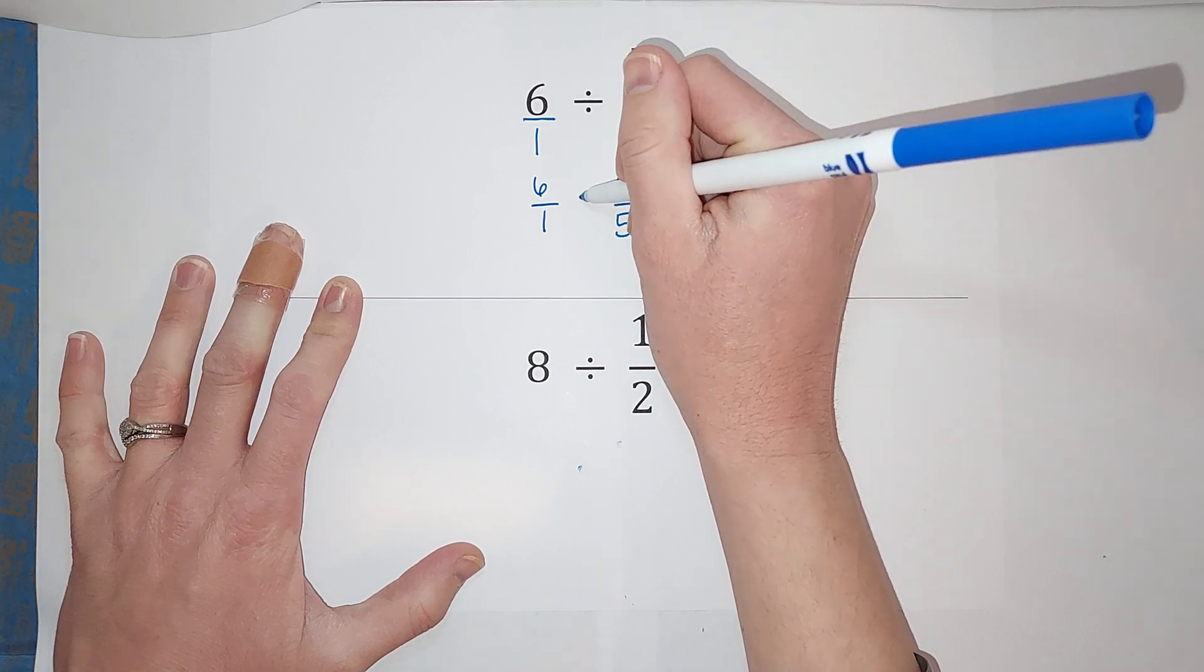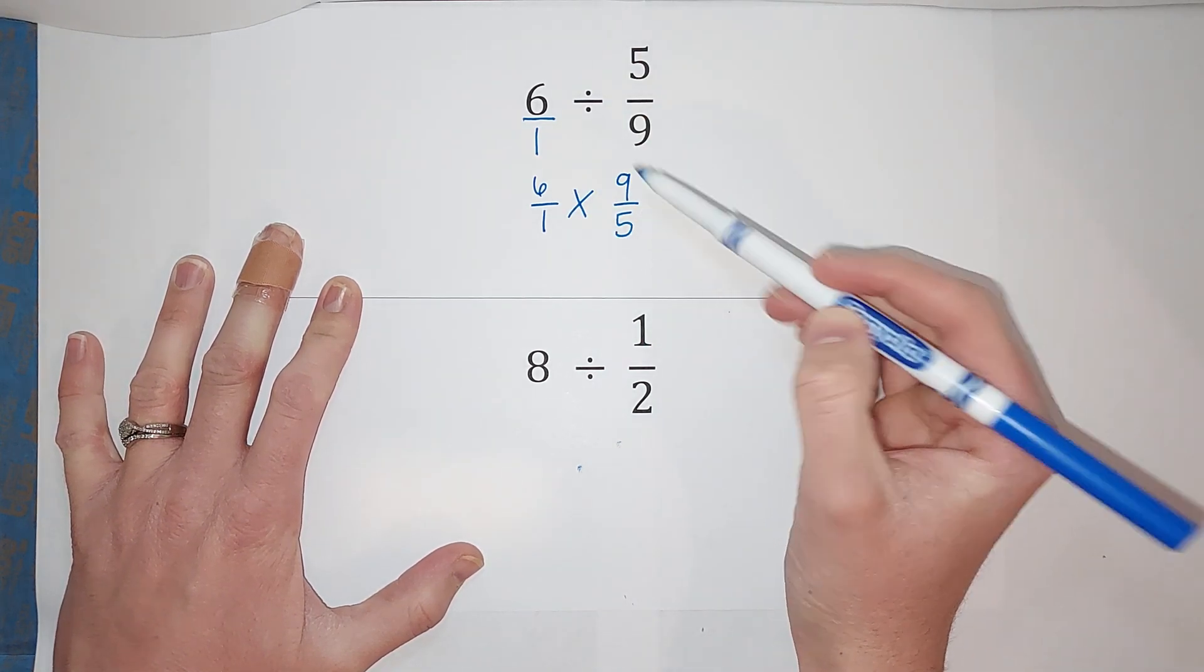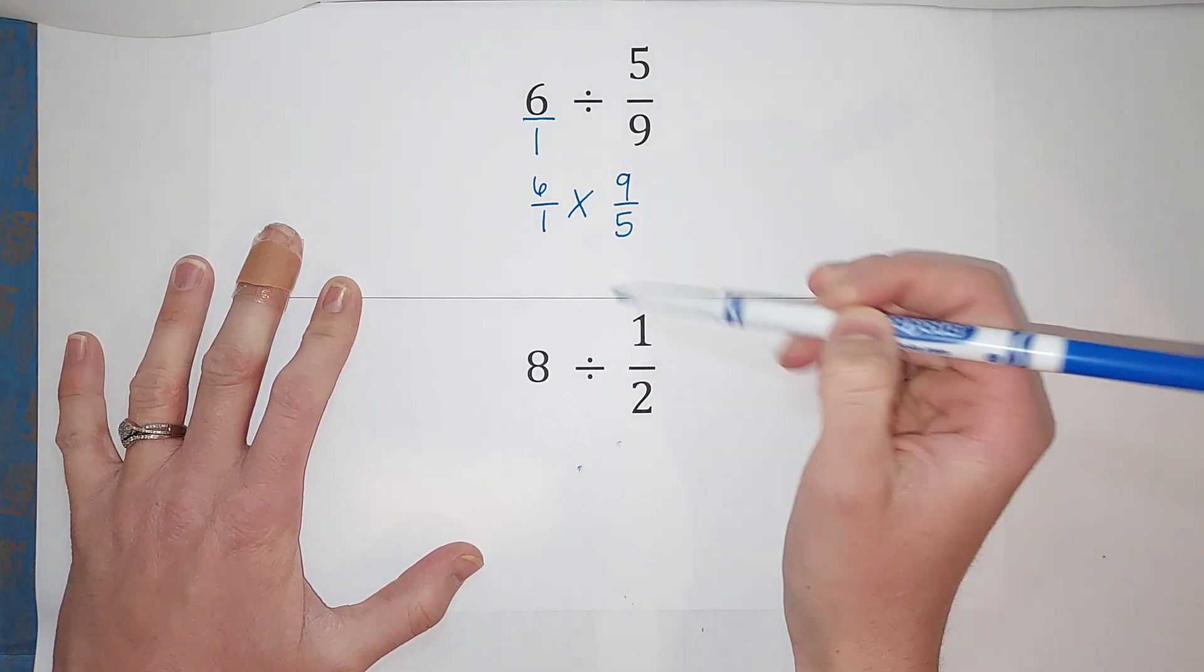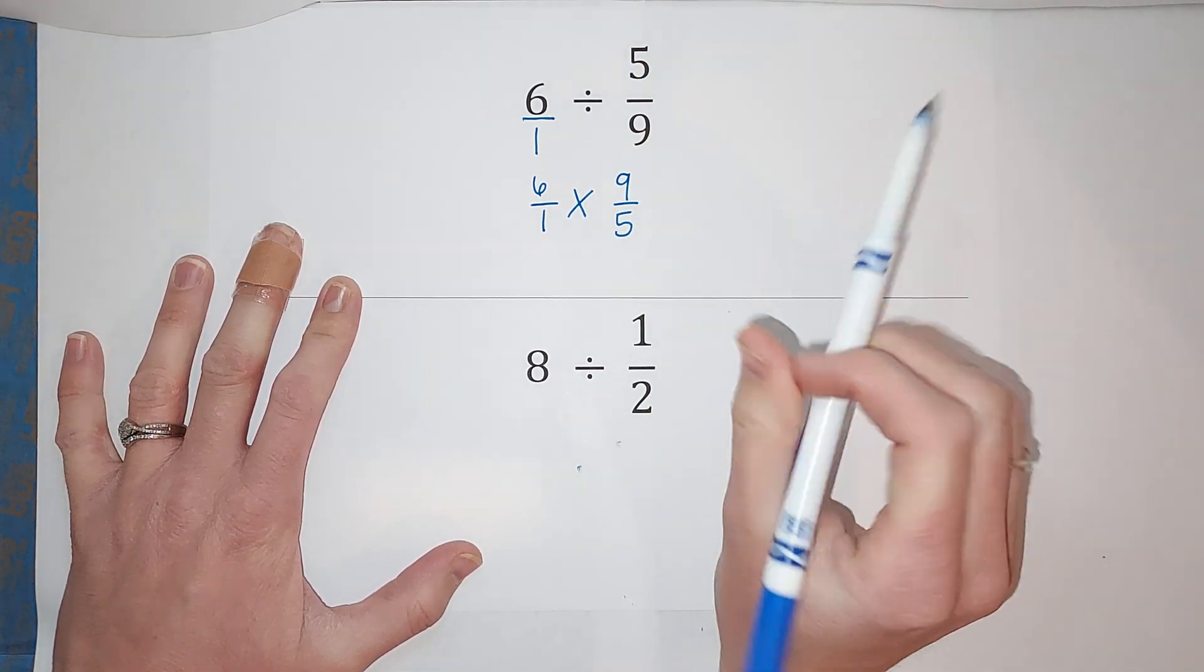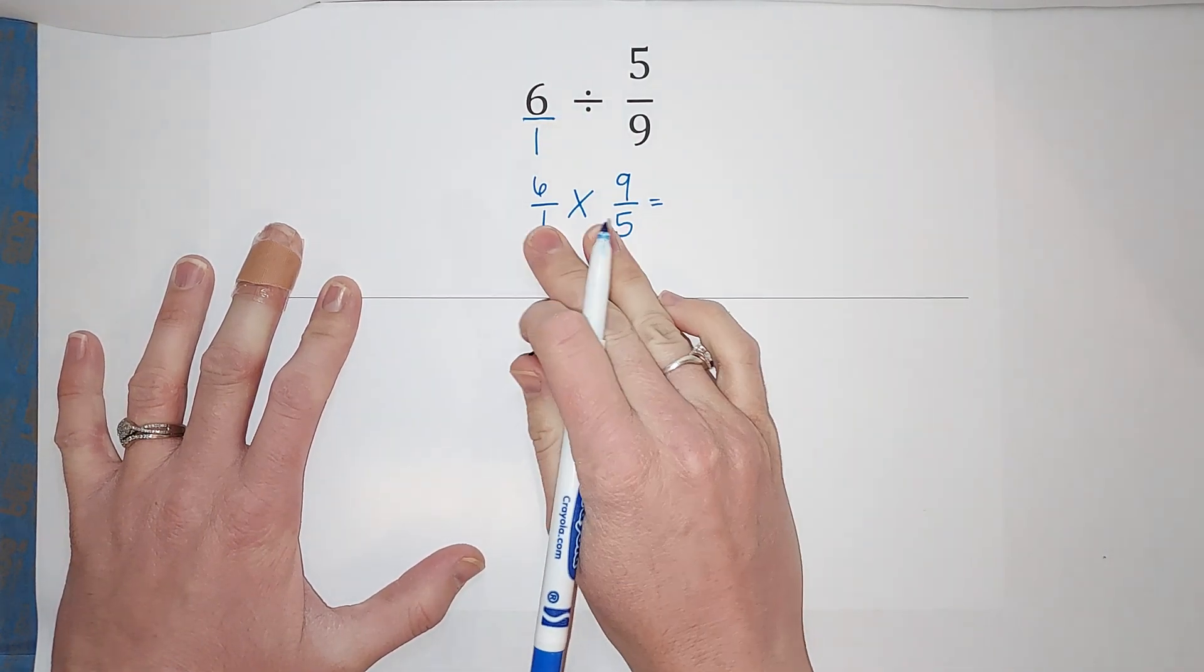Now if you don't believe me, if you think this is witchcraft, watch this one. I'm going to prove it to you. So now when we multiply fractions, denominators don't have to be the same.